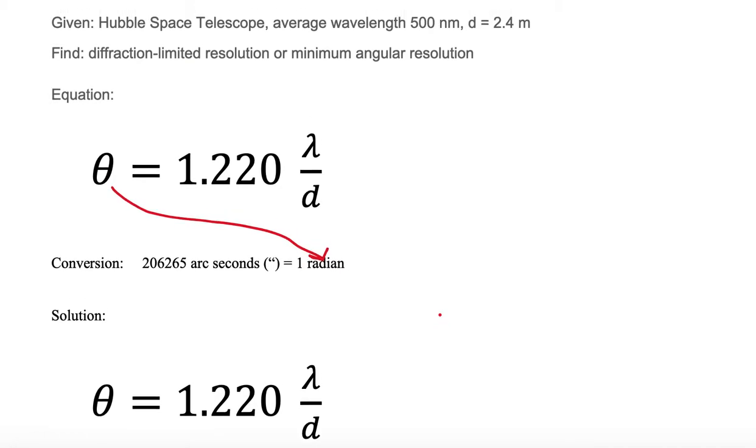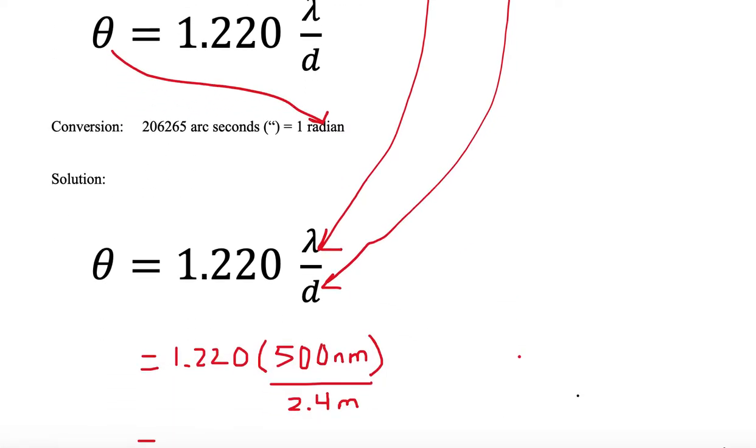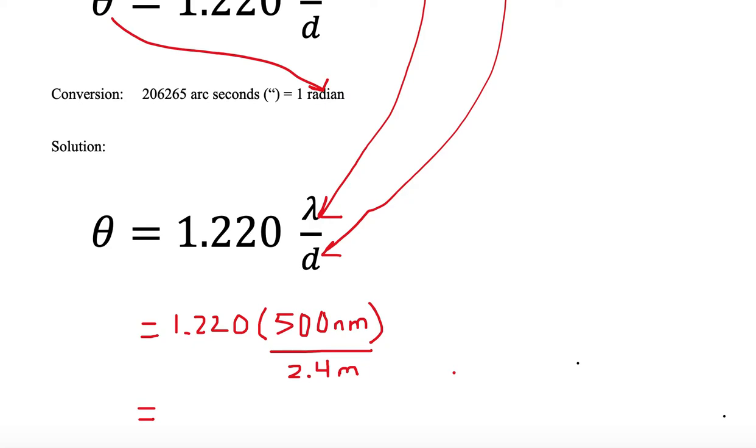Here's our theta equals 1.220 multiplied by the wavelength divided by the diameter. We need to substitute in for the wavelength and the diameter, and then we need to solve. So I went ahead and substituted in 1.220 multiplied by 500 nanometers divided by 2.4 meters, and now we need to solve it.